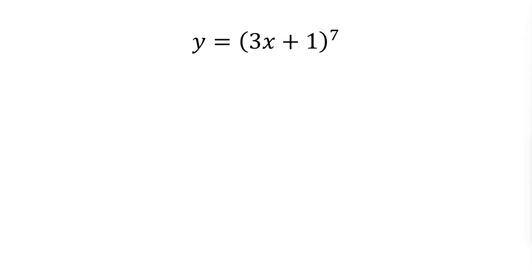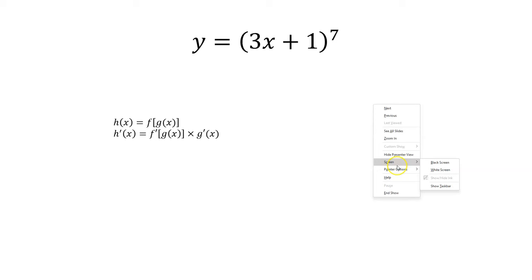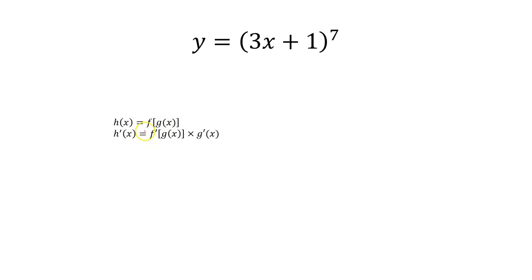Alright, so let's go ahead and look at this particular problem and work through it. This is the equation for the chain rule. A function h of x is equal to f of g of x — this is a compound function, a function within a function. And to take its derivative, you want to take the derivative of f of x and leave g of x alone. Then multiply that by the derivative of the inside, g of x. So you get f prime of g of x times g prime of x.